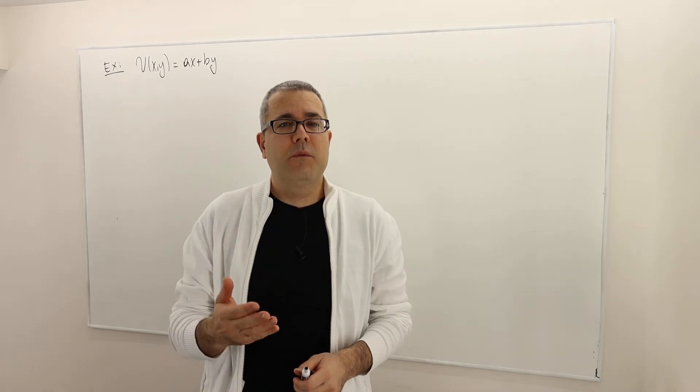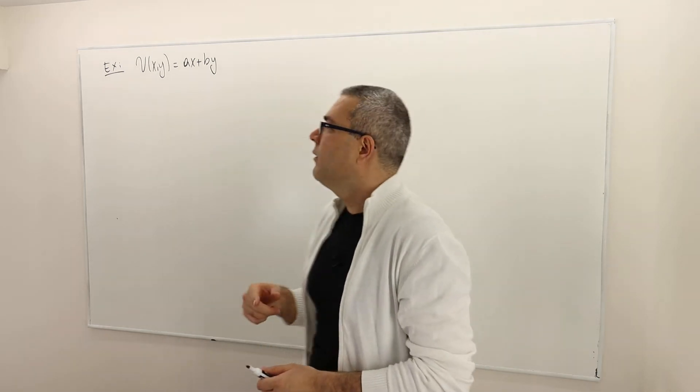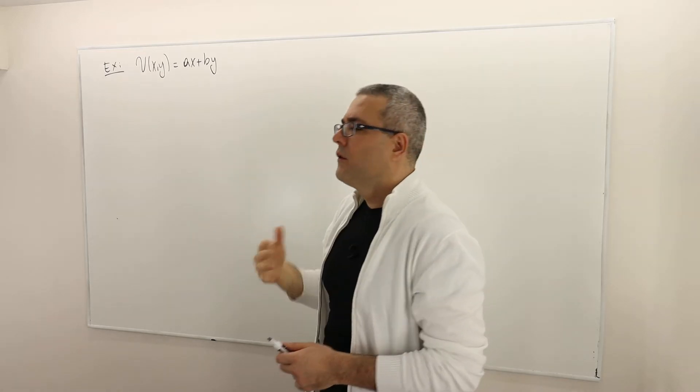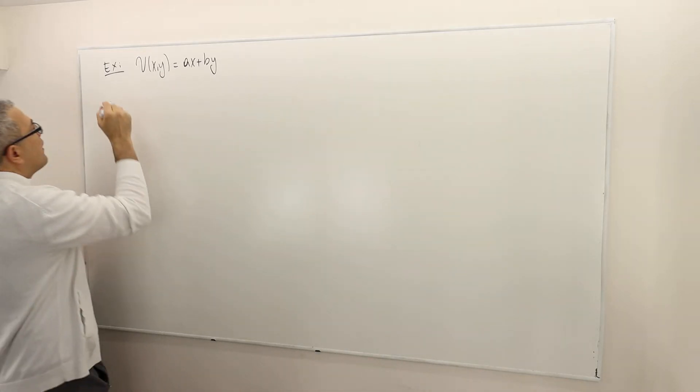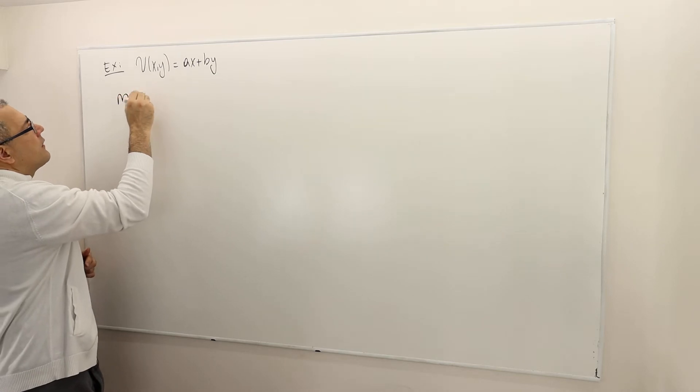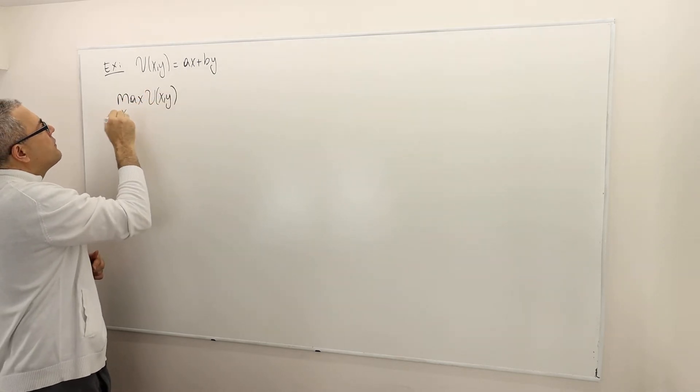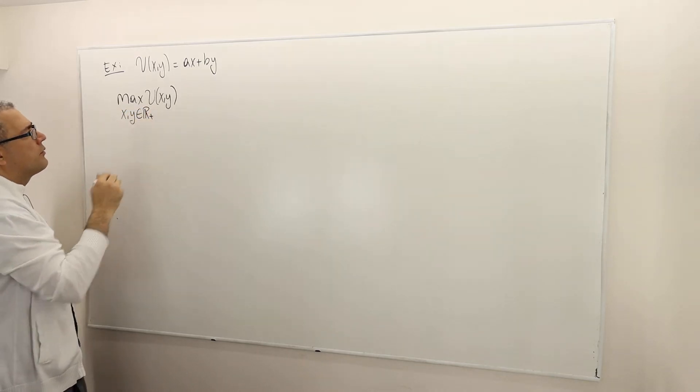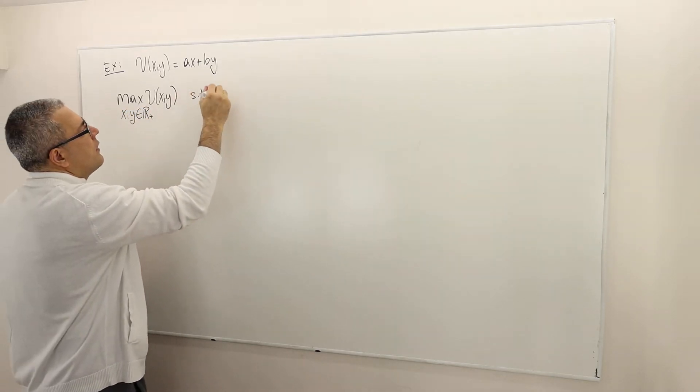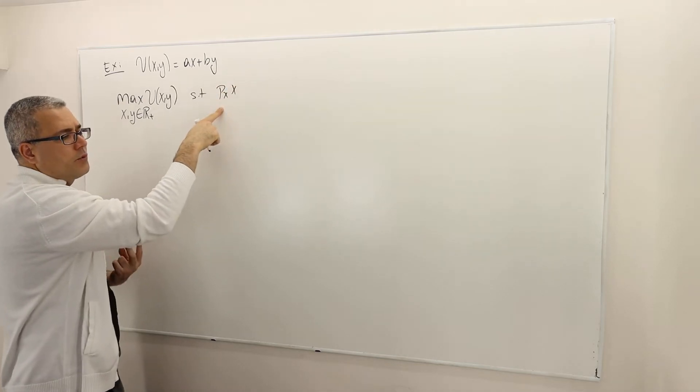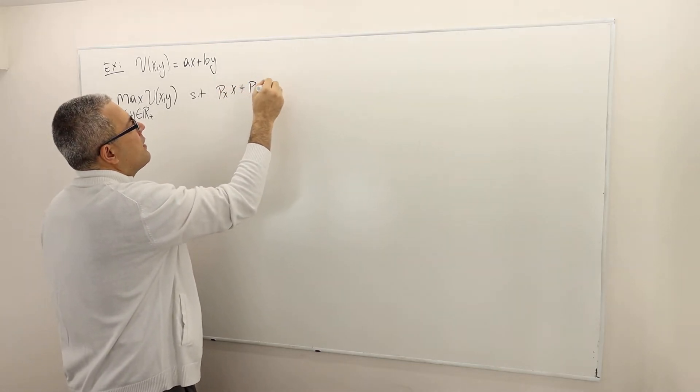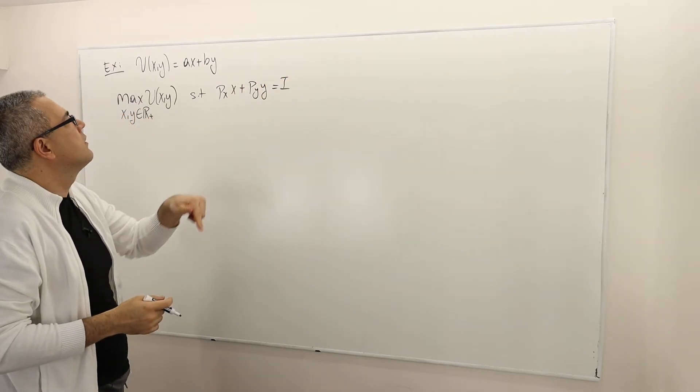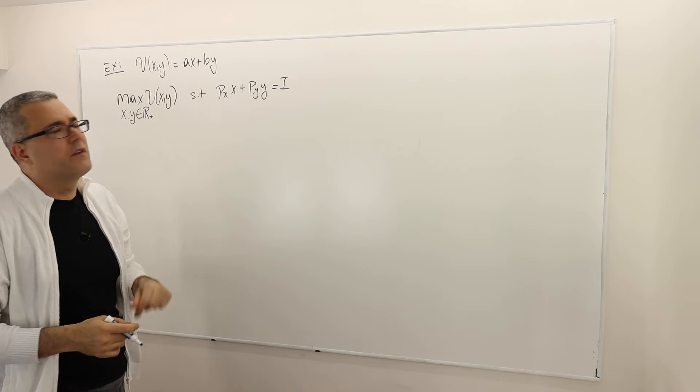Hi guys, welcome to the next episode. Now I would like to talk about this example. The utility maximization is the following: maximize my utility by choosing the choice variables X and Y from R plus subject to PX*X plus PY*Y equals income. I'm not writing less than or equal to income because this is an increasing function.